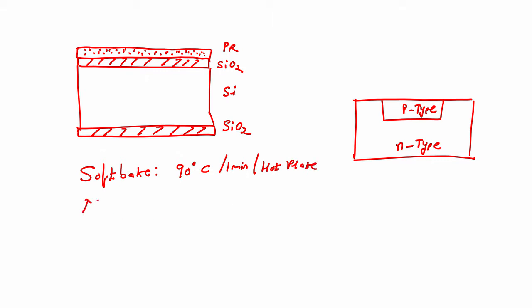We bake at 90 degrees centigrade for one minute on a hot plate. Then we load the mask — so I load the mask. How will my mask look? My mask will look like this — it is a bright field mask.